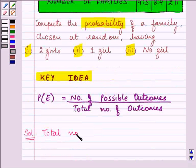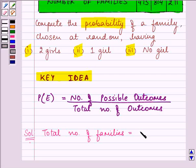The total number of families are 475 plus 814 plus 211, that is equal to 1500. So out of 1500 families, 475 are having 2 girls.